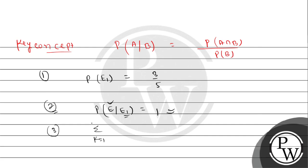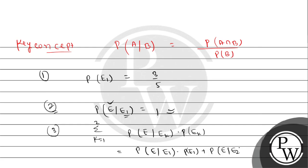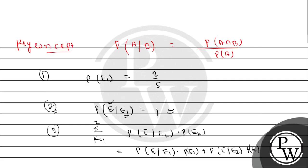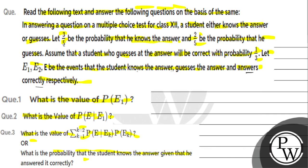For Part 3, the summation from k=1 to 2 of P(E|Ek)·P(Ek) expands to: P(E|E1)·P(E1) + P(E|E2)·P(E2). P(E|E1) is 1, and P(E1) is 3/5, so the first term is 1 × 3/5.